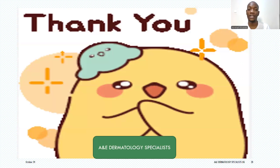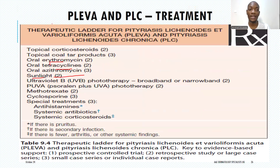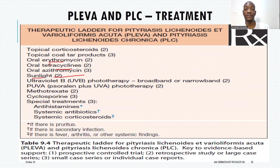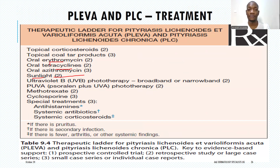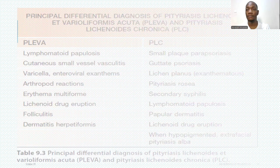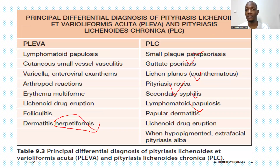A key point to remember: looking at the name PLC — pityriasis lichenoides chronica — pityriasis means it has scale, placing it among papulosquamous disorders; lichenoides means it gives flat-topped papules, hence the 'lichenoid' suffix; and acuta in PLEVA means acute onset, under six weeks, whereas when it becomes chronic it becomes PLC — pityriasis lichenoides chronica. That is how you tell the difference between PLEVA and varicella, and between PLEVA and PLC. Thank you very much, we shall stop here for today.